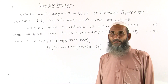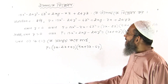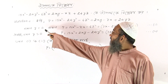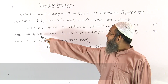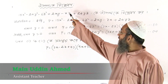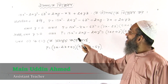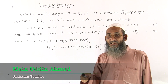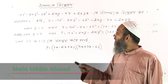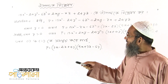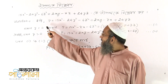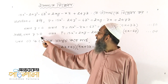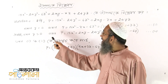Hello everyone, welcome to this video. We can say x0, y0, and z0. If the color is x0 and y0, then y0 and z0. We can say, if we have seen the same...